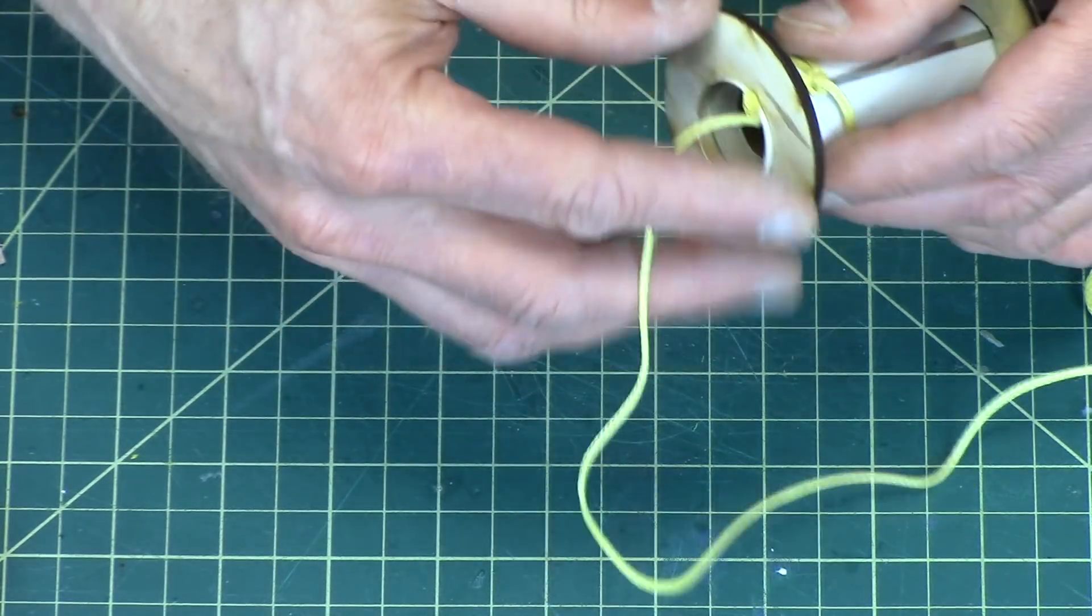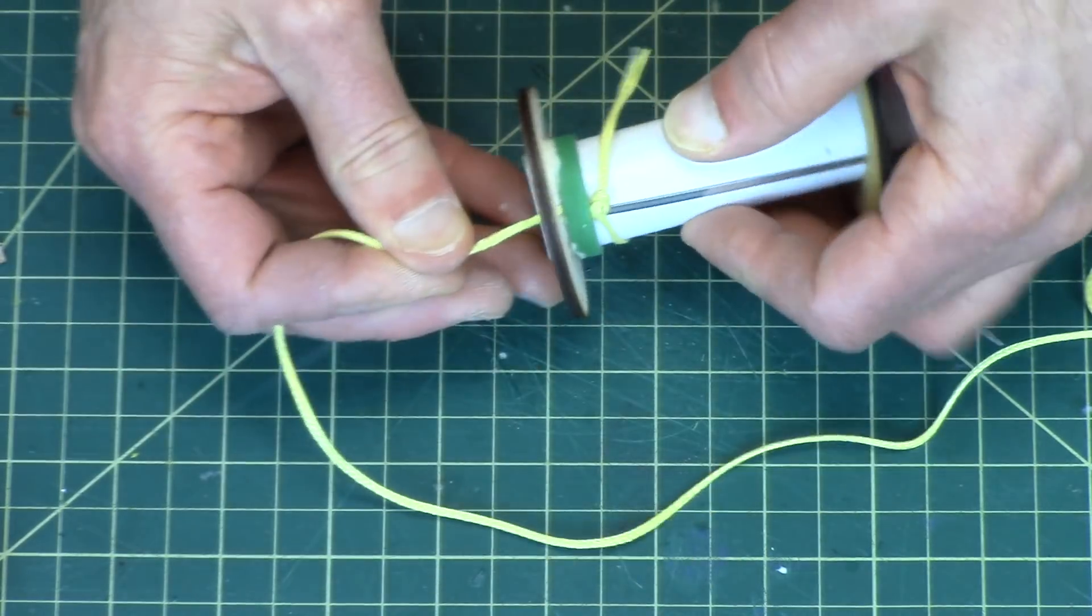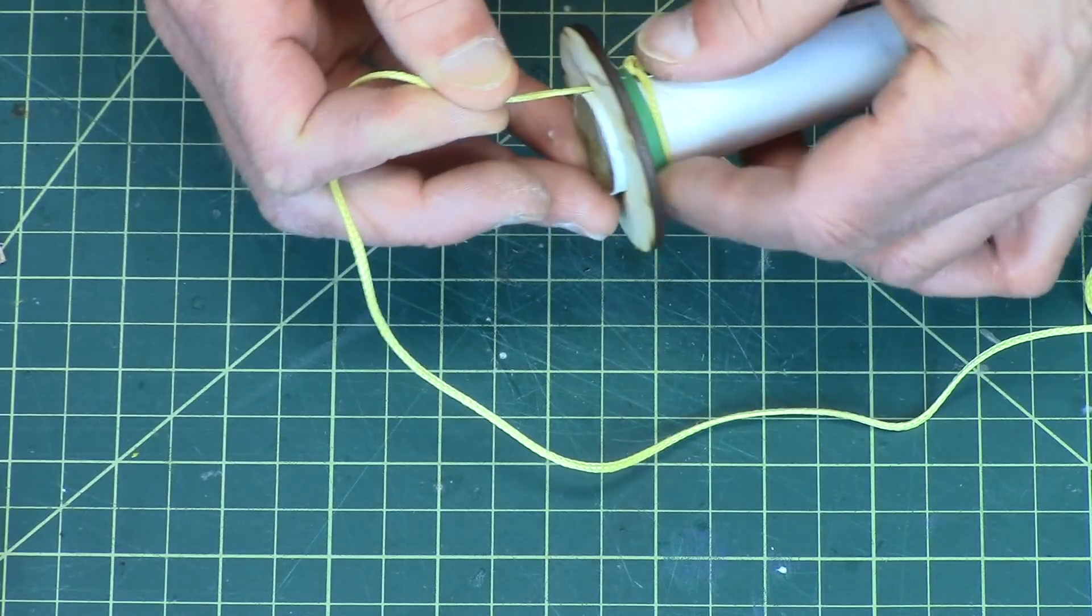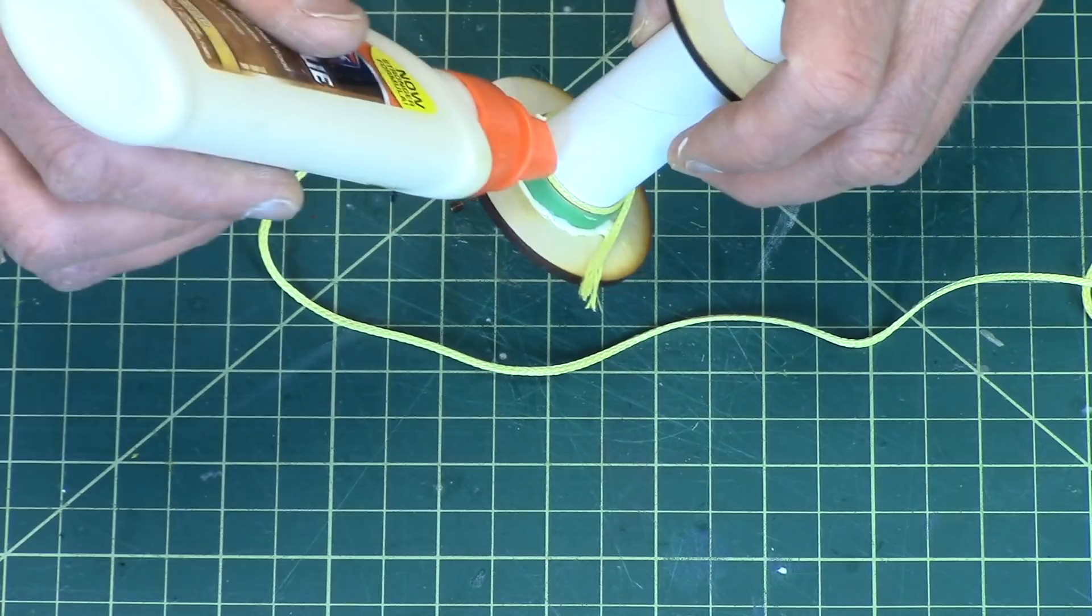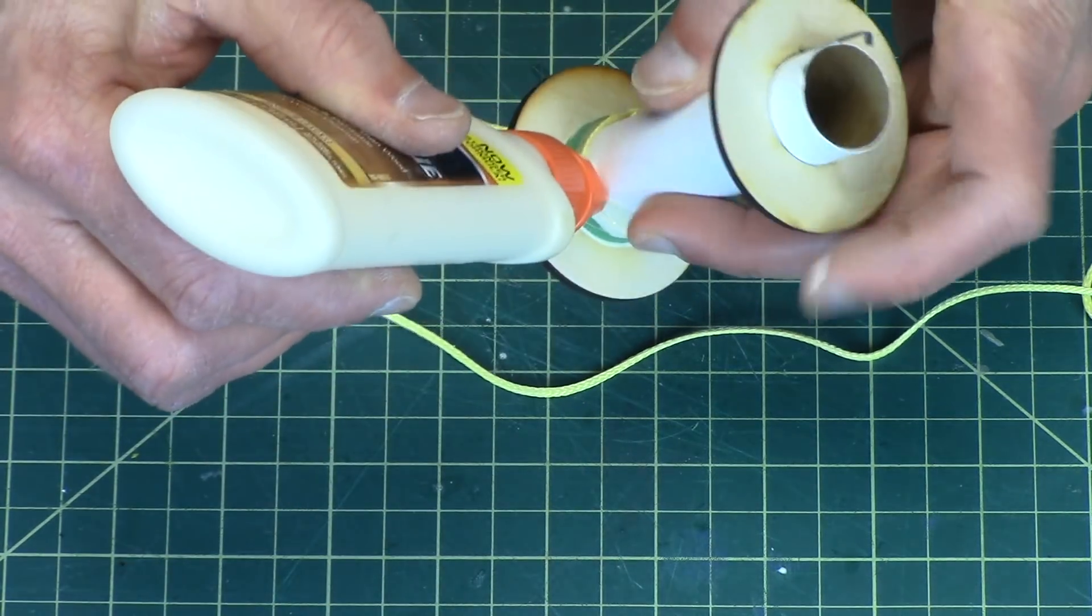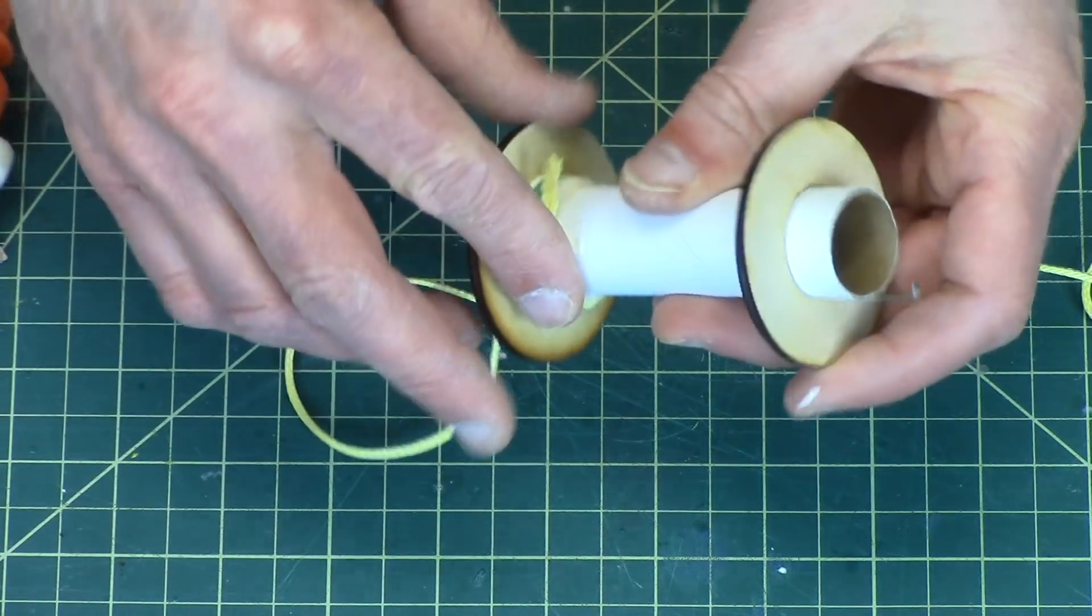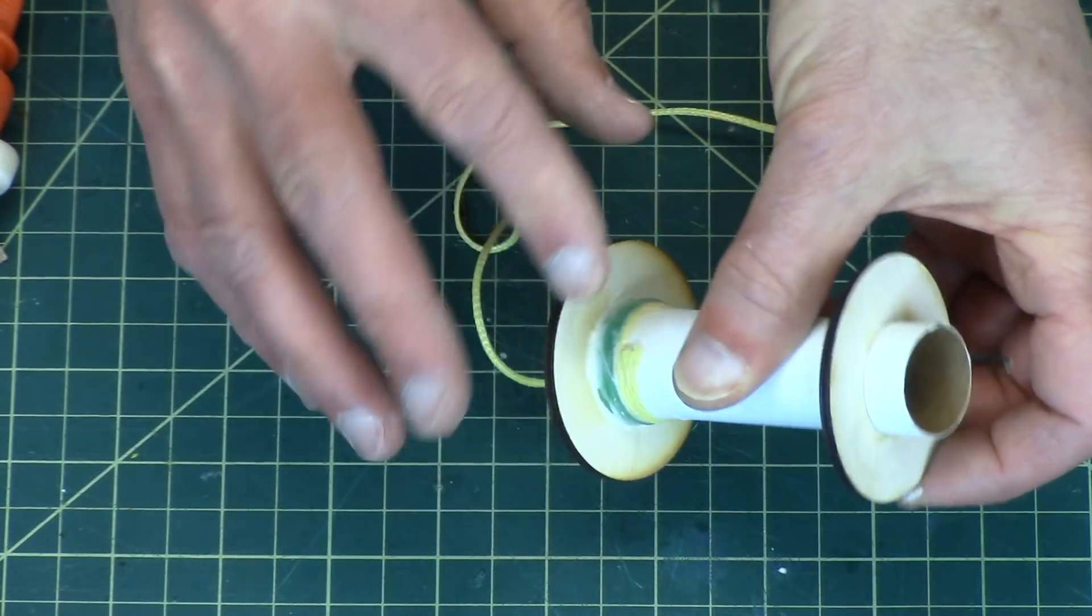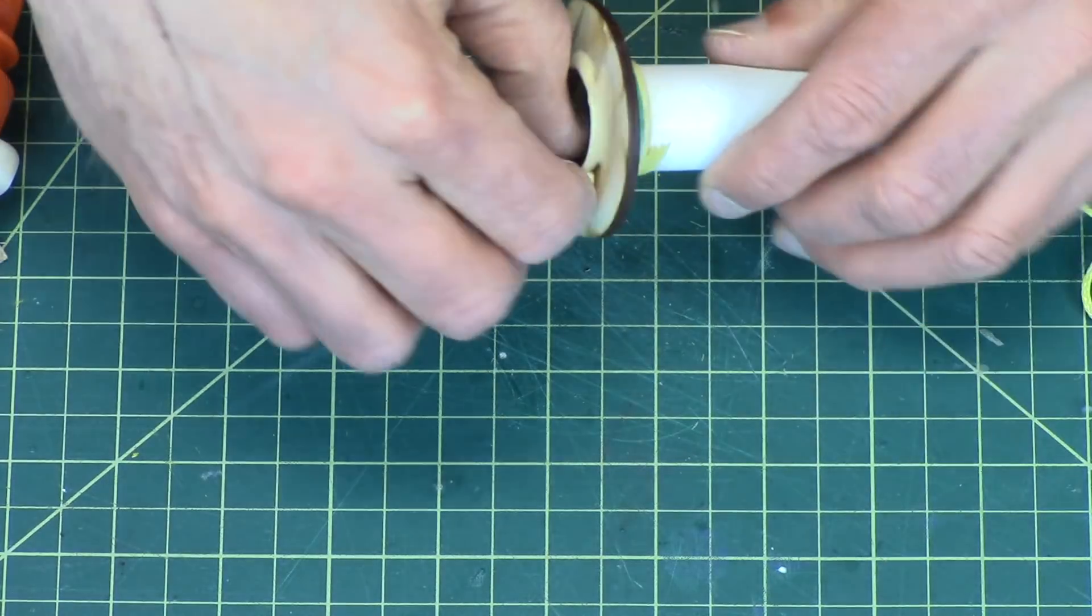So now you want to pull this tight, you want to press it up against that green ring there like that, and put a fillet of glue on the outside here and a fillet of glue over the shock cord like that. And it's pretty messy, so just run your finger around there. See how nice that looks now? And then do the same on this side.